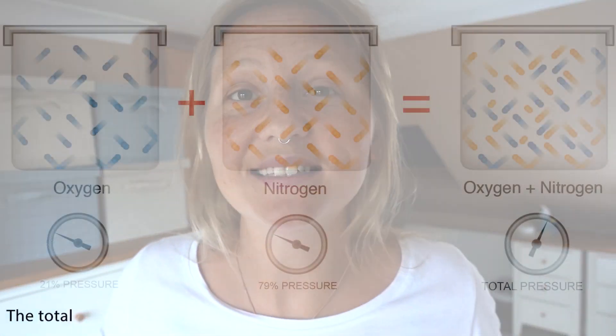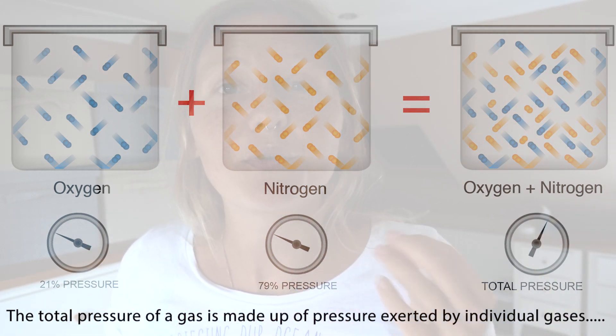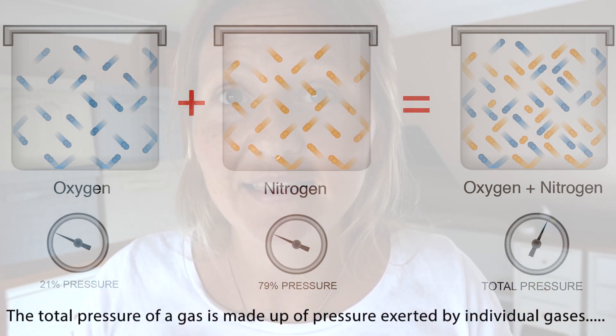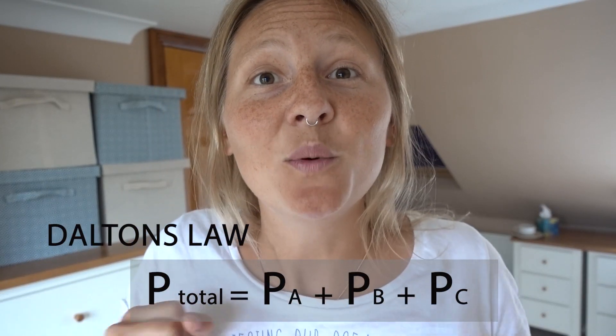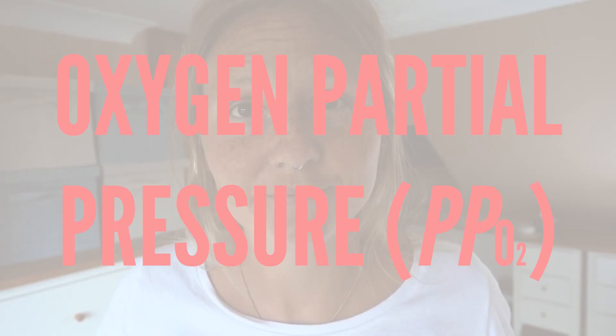I'm not going to read out the gas law to you. Simply, all it means is that the total pressure of a gas — meaning the total pressure of gas in your cylinder — is made up of the pressure exerted by individual gases in that breathing mixture, for example oxygen and nitrogen. The equation looks like this, which simply means this. The pressure exerted by these individual gases is known as partial pressure. Oxygen partial pressure refers to the pressure exerted by only the oxygen part of the blend, hence the name partial, meaning it's just part of the total pressure inside your cylinder.